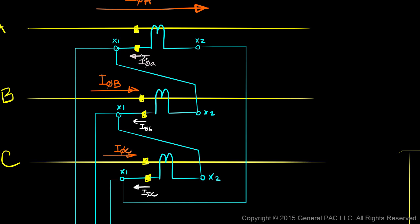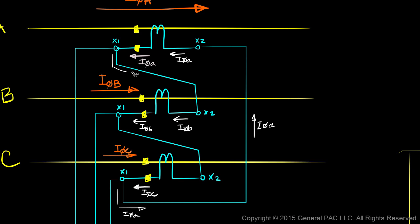Since secondary Phase A current is flowing out of the dot, this means the current in this line is also secondary Phase A current — and the current flowing this way is also secondary Phase A current. Since secondary Phase B current flows out of the dot on this side, this is secondary Phase B current, and this is also secondary Phase B current. And since secondary Phase C current flows out of the dot, this current is secondary Phase C current, and this current here is also secondary Phase C current. It's simply the phase currents flowing through the delta connection.